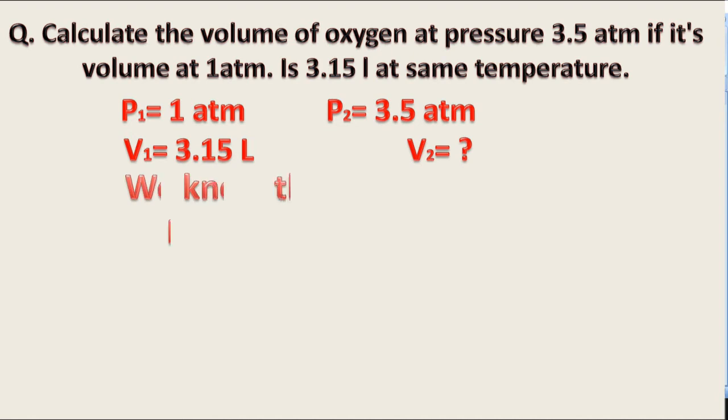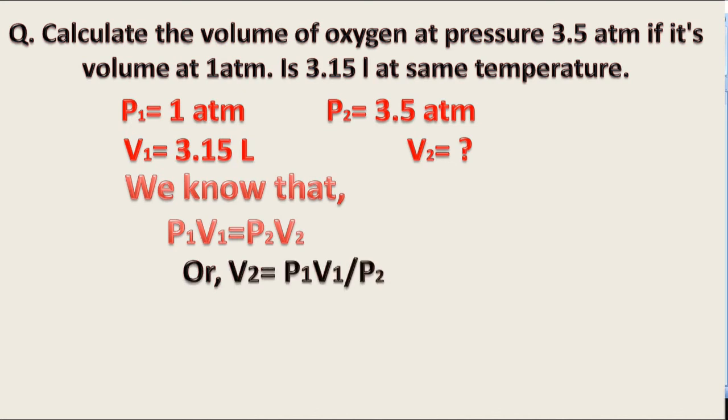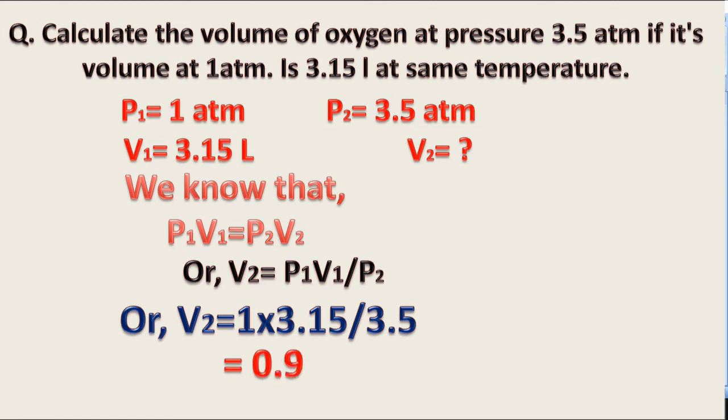From Boyle's law, we know that P1V1 is equal to P2V2. Or V2 is equal to P1V1 upon P2. Or V2 is equal to 1 into 3.15 upon 3.5, which is equal to 0.9 liter.